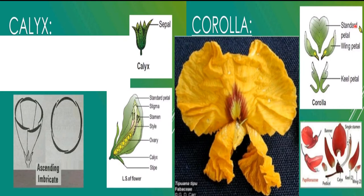Coming to the corolla, it consists of five petals, polypetalous, papilionaceous — that means it consists of a posterior petal which is the outermost large petal called the standard petal. Next to this, it has two lateral petals called wing petals and two anterior innermost united petals which form a boat-shaped structure called the keel petal. This is in descending imbricate estivation.